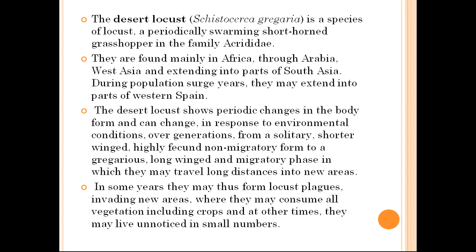The desert locust is a species of locust — a periodically swarming short-horned grasshopper in the family Acrididae — and this is the one attacking India. They are usually found in Africa, Arabia, and West Asia, extending into South Asia. During population surge years they may extend into parts of Western Spain. The desert locust can change over generations from a solitary, non-migratory form to a gregarious, long-winged, and migratory phase.